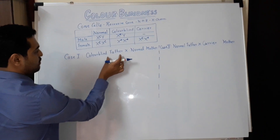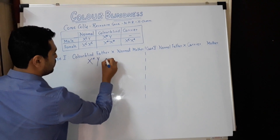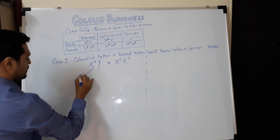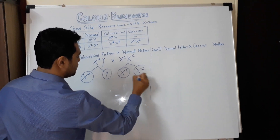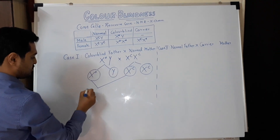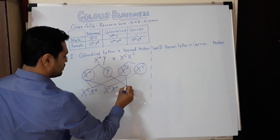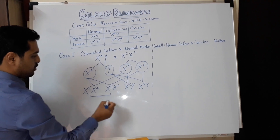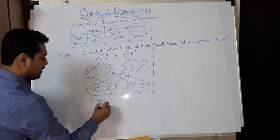We are considering two different cases. In Case 1, the father is colorblind and the mother is normal, represented as X small c Y for the father and X capital C X capital C for the normal mother. Forming gametes like a typical monohybrid cross: the father produces X small c and Y gametes; the mother produces X capital C gametes. The offspring are: X capital C X small c, X capital C X small c, X capital C Y, and X capital C Y. The two daughters each have one recessive and one dominant gene, making them carrier daughters.